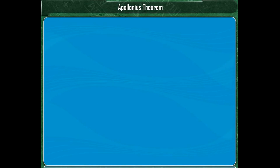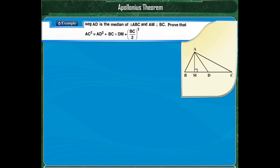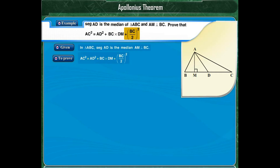Let's solve one more problem. Segment AD is the median of triangle ABC and AM is perpendicular to BC. Prove that AC squared is equal to AD squared plus BC into DM plus BC upon 2, the whole squared. It is given that AD is the median of triangle ABC and AM is perpendicular to BC. We have to prove that AC squared is equal to AD squared plus BC into DM plus BC upon 2, the whole squared.